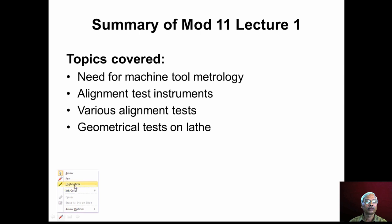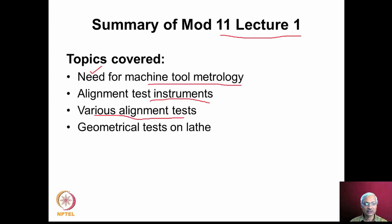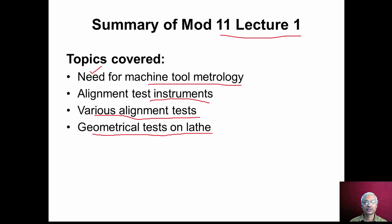With this we conclude module 11, lecture number 1. In this lecture we discussed the need for machine tool metrology, the various instruments used, and the different types of alignment tests — parallelism, perpendicularity, and whether the movement of various elements is parallel to the lathe axis. We also discussed various geometrical tests conducted on lathe. We will continue the discussion on machine tool metrology in lecture number 2.